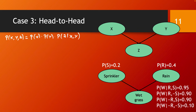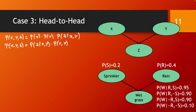We can also write the joint probability distribution by showing the conditional probability of z on x and y. The probability of x, y, z is equal to the probability of z given x and y times the joint probability of x and y. When we make these equal to each other and simplify, this implies that the probability of x and y is exactly equal to the probability of x times the probability of y — which shows that x and y are independent.